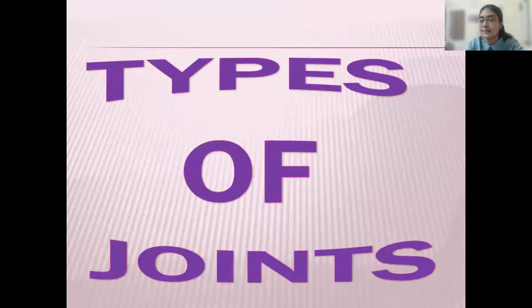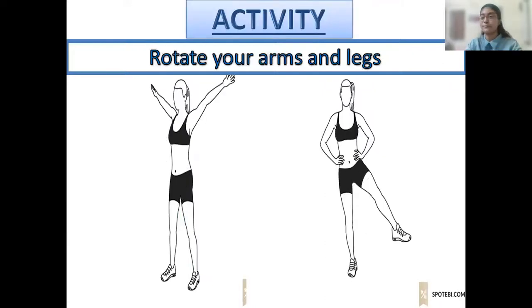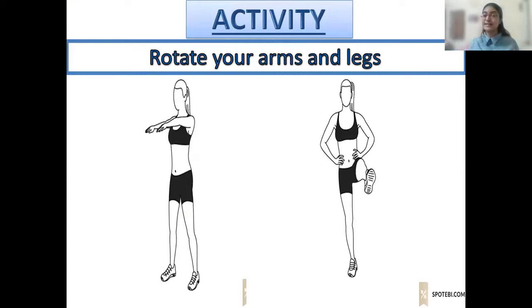Today, we will learn about various types of joints. For that, we need to perform some activities. I am sure some of these are in your PT classes as well. It will be varied. Let us try it out. Okay? See how this lady is rotating her arms and legs. Come on, stand up and try it out. Try to rotate your arms and legs. Are you able to do it? Very good.